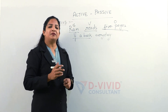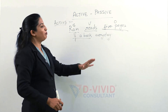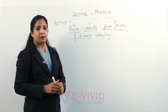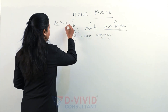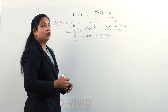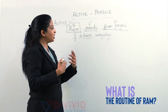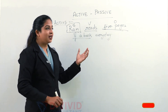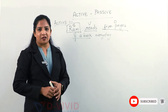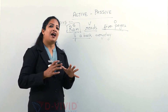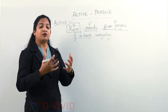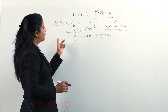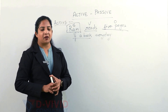In this sentence, we are emphasizing and focusing on Ram — what he specifically does in his routine. So when the subject, the doer of the action, is the important part, we choose active voice. If we are focusing on the subject, then we will write in active voice.